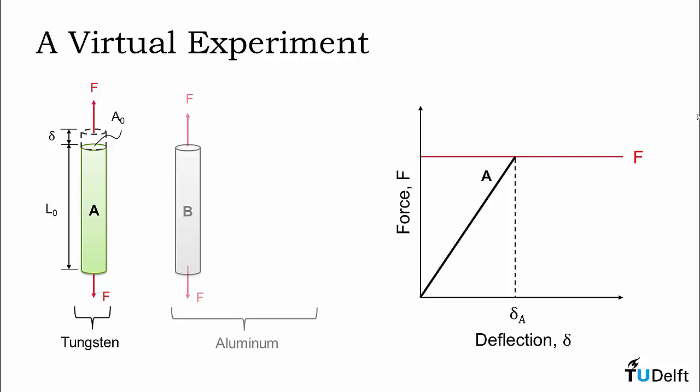Now if we look at a second rod of material, this time made out of something softer, such as aluminum, and we apply the same force, we intuitively know because it's softer, we're going to end up with a larger deflection, delta B.